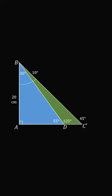So we've created a right triangle, where one angle is 45 degrees, and the other angle is also 45 degrees. Therefore, both sides are equal to each other, and AC prime is equal to 20 centimeters.